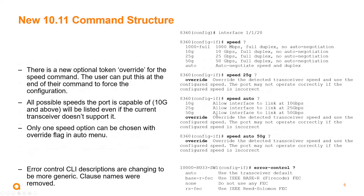Now with the new 10.11 command structure, sticking with the error control at the bottom of the page, the CLI descriptions have been changed to be more generic, and the clause names were simply removed. So if we look at that error control configuration on the right, when we do error control question mark, we still have the same options, but the clause names for base RFEC and RSFEC have been removed.